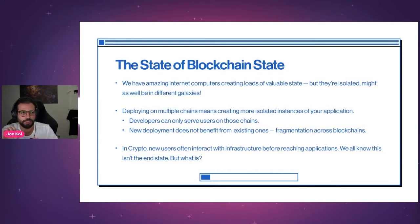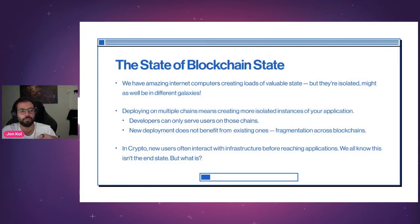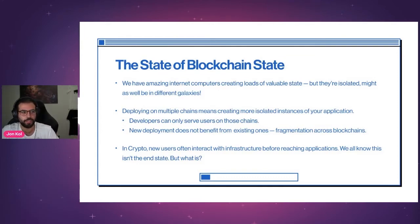To summarize where we are in crypto today — it's comparable to if iOS and Android existed as completely separate ecosystems with no functional communication between them. Imagine a world where Uber drivers on Android can't pick up riders on iOS and vice versa. No one would find this acceptable. We know this isn't the end state — we want a different state. How do we get there?